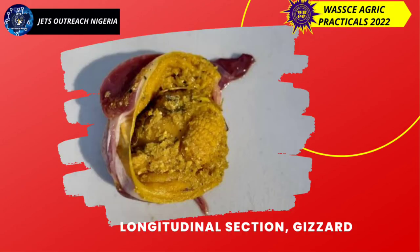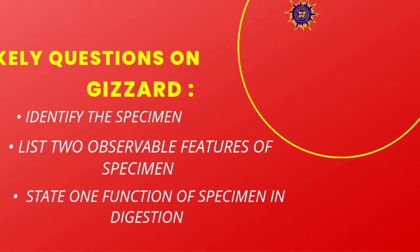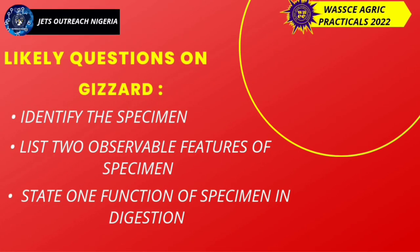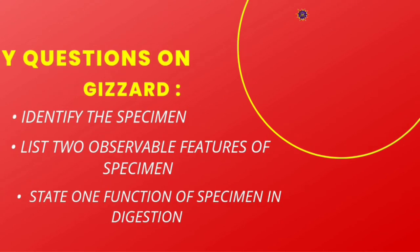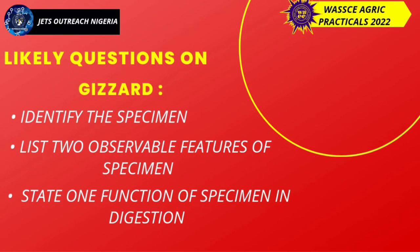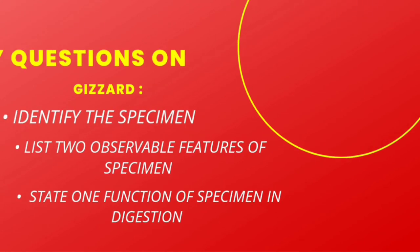Next is the longitudinal section of the gizzard. Likely questions: identify the specimen, list two observable features of the specimen, state one function of the specimen in digestion.